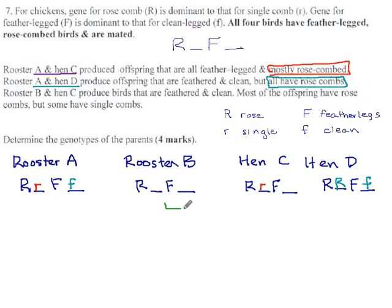Rooster B and hen C, we are told, produce birds that are feathered and clean. So some of their offspring are big F blank, which is not surprising. We know there's big Fs in this family, and they produce some clean ones who are little f little f. Well, you've probably noticed by now recessives are gold, and we jump on these immediately. If this offspring is little f little f, that would mean dad had to contribute one little f, and mom had to contribute the other one. So good. That gets us a lot of information. And then they say most of the offspring have rose combs, so we get big R blank, which is not surprising because we know there are big Rs here. But some have single combs, little r little r. Again, the recessive is really good information. This means they got a little r from each parent, one from mom, which we already knew was there, one from dad. So this has to be little r.